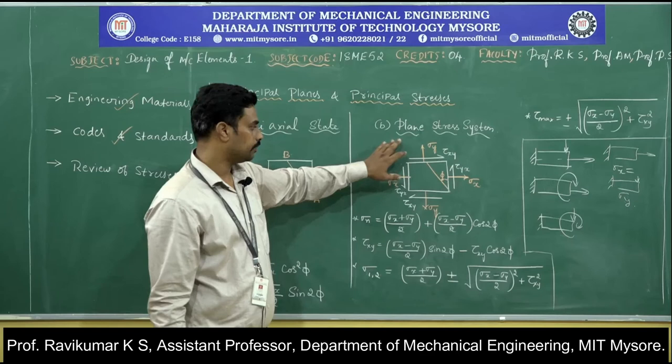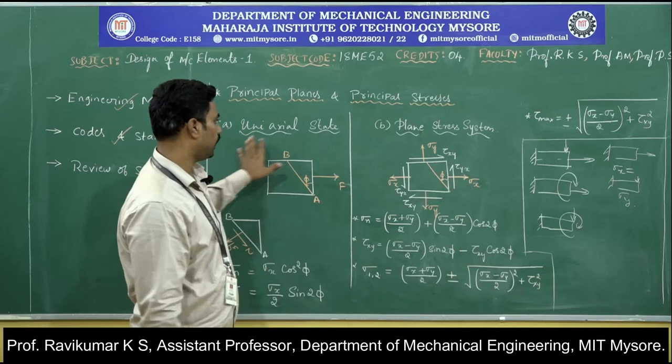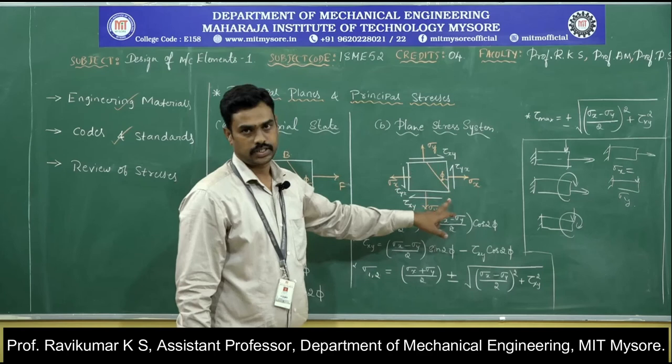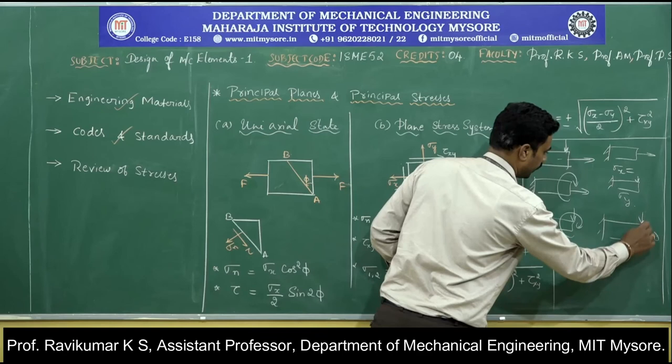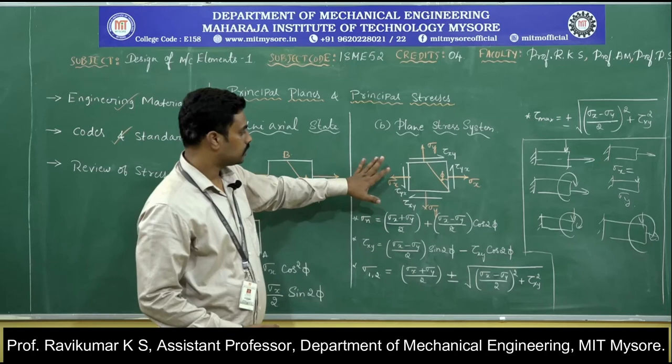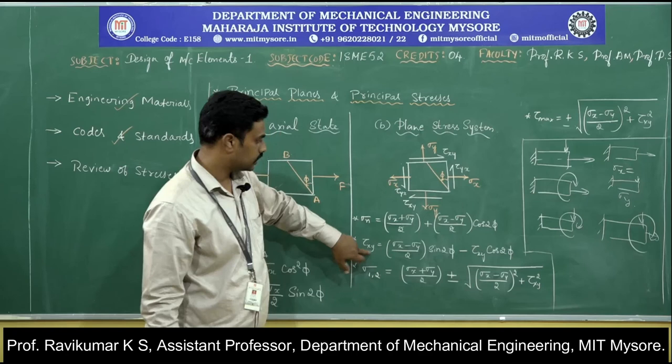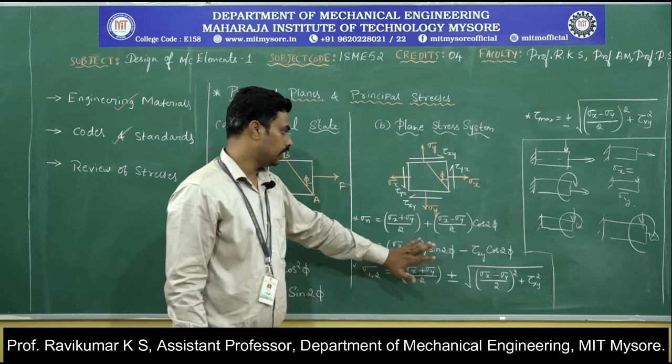In the plane stress system, the member is subjected to stresses in two directions, sigma_x and sigma_y, along with shear. This is the case of a member subjected to combined axial, bending, and shear loading. If you consider an inclined plane, you will find normal stress and shear stress on that plane. These formulas are available in the data handbook. Sigma_x corresponds to the stress from one individual load without considering the other; tau corresponds to the shear load or torque applied without considering the axial stresses.